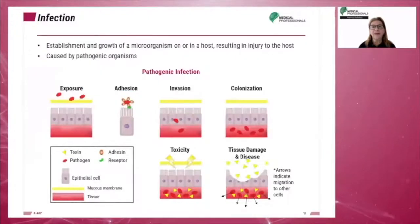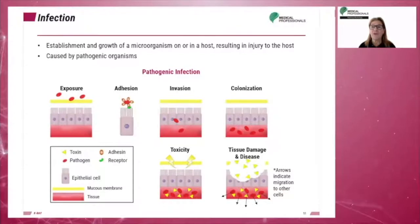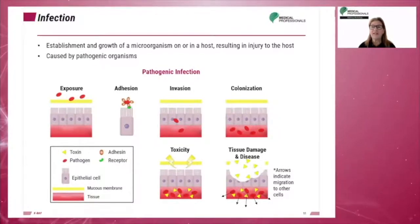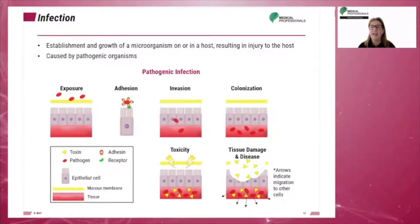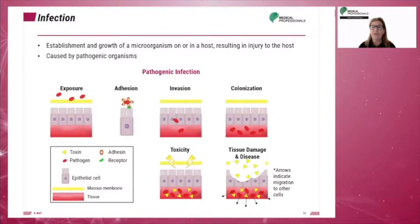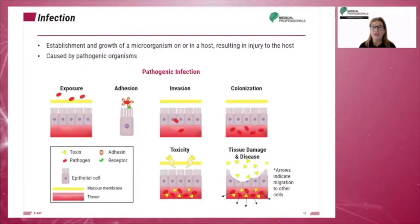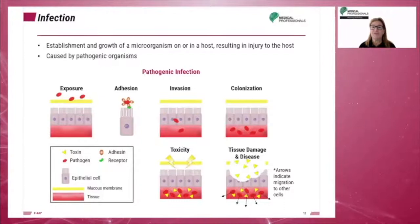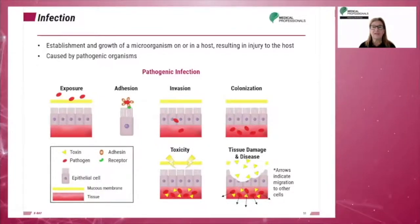An infection occurs when a pathogen invades and begins growing within a host. To cause a disease, pathogens must be able to enter the host body, adhere to specific host cells, invade and colonize host tissue, and inflict damage on those tissues. This process is composed of six steps.